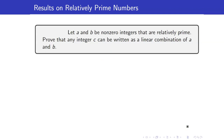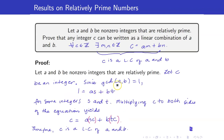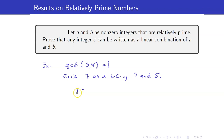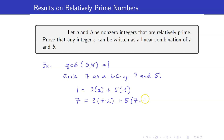The proof gives us a practical method: as long as we know how to write 1 as a linear combination of a and b, we can write any c as a linear combination. For example, gcd(3, 5) = 1, and 1 = 3·2 + 5·(−1). To write 7 as a linear combination of 3 and 5, we multiply through by 7: 7 = 3·(7·2) + 5·(7·(−1)) = 3·14 + 5·(−7).